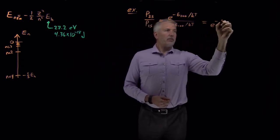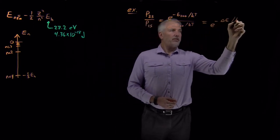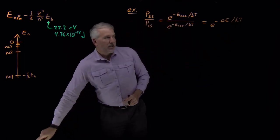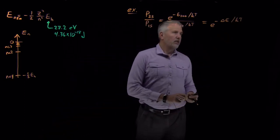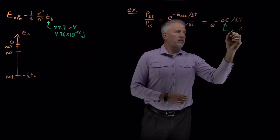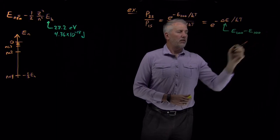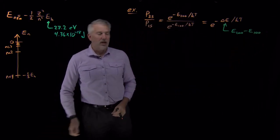So altogether, this is e to the minus difference in energy between those two, where the difference in energy is the energy of the numerator minus the energy of the state referred to in the denominator.